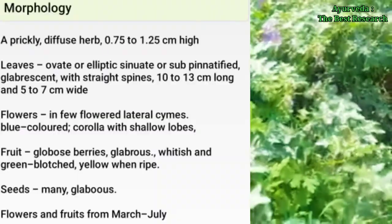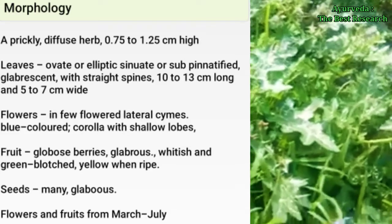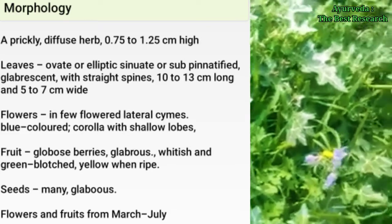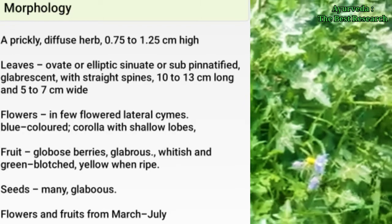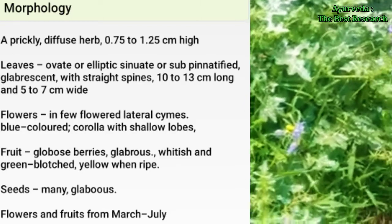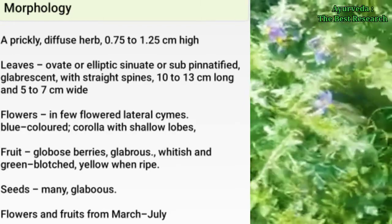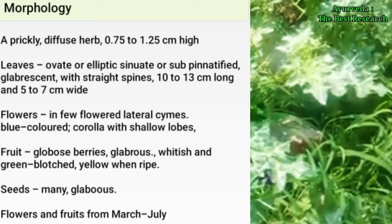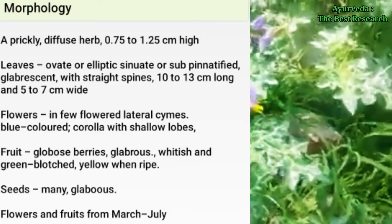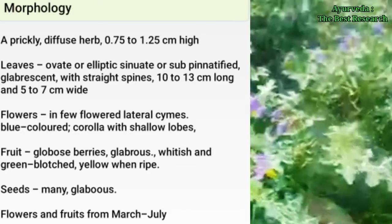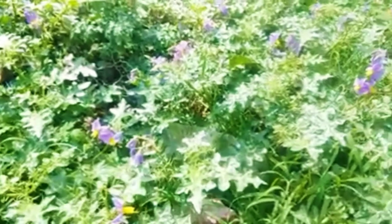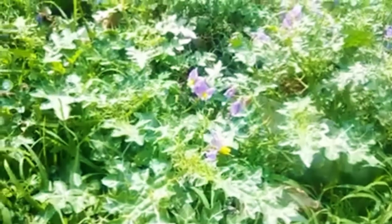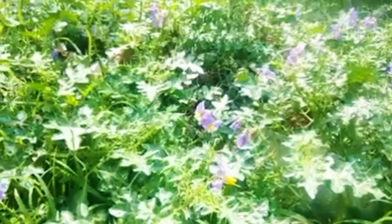Morphology: it is a prickly diffuse herb, 0.75 to 1.25 meters in height. Leaves are ovate or elliptic, sinuate or sub-pinnatifid, glaucescent with straight spines, 10 to 12 cm long and 5 to 7 cm wide. Flowers are in blue-flowered lateral cymes with blue color corolla with shallow lobes.